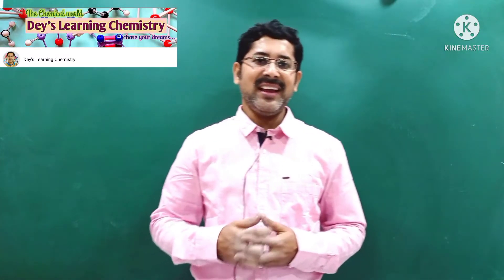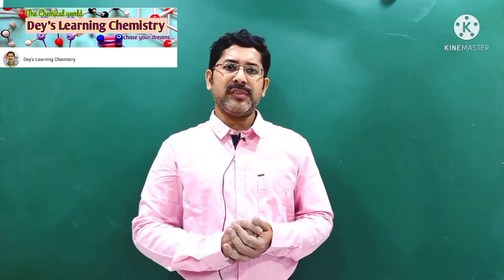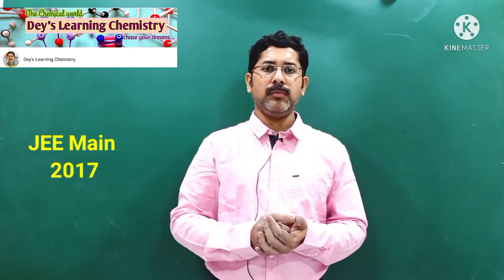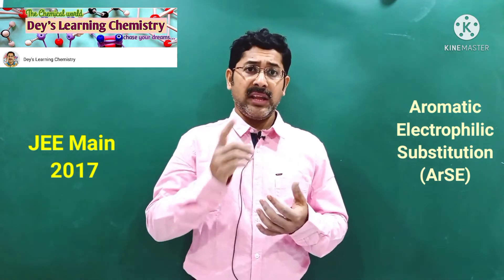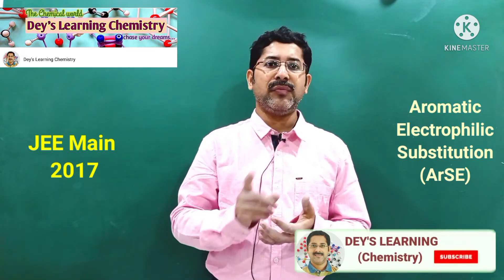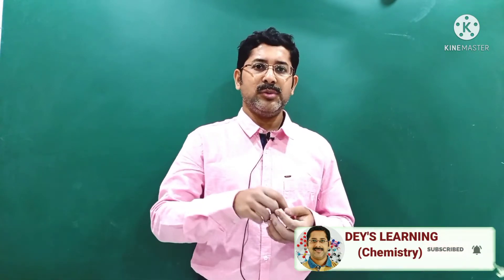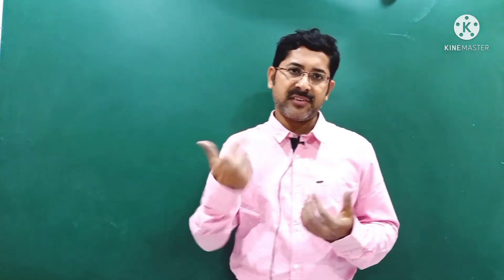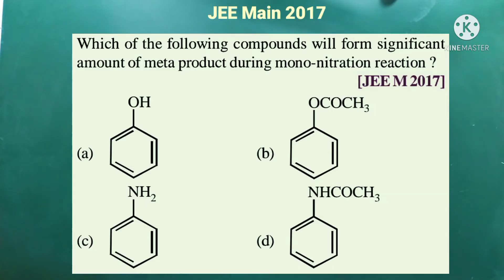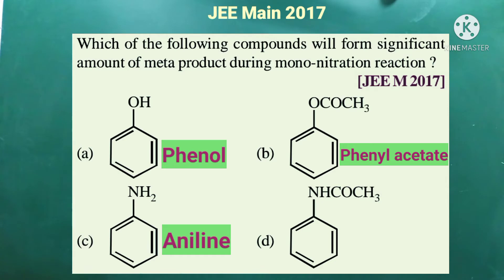Hello students, welcome to this session. In this video we are going to discuss one MCQ question from JIMN 2017 paper on ArES, that is aromatic electrophilic substitution reactions. The question on the screen asks: which of the following compounds will form a significant amount of meta product during mononitration reactions? The four options are: option A - phenol, option B - phenyl acetate, option C - aniline, and option D - acetanilide.